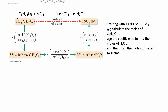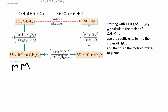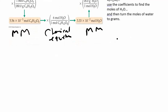For example, in this problem you're starting off with one gram of glucose. To figure out how many grams of water you're making, you go from grams to moles using molar mass, then convert moles to moles — for every one mole of glucose you get six moles of water, which comes from the stoichiometric coefficients in the chemical equation. Then once you have moles of water, you get to grams of water using another molar mass.